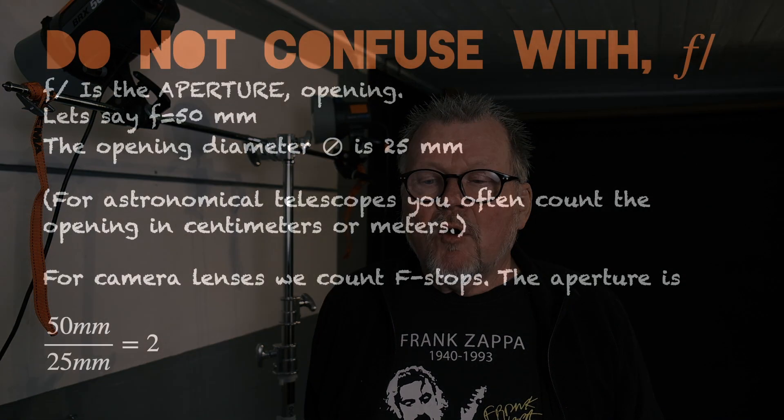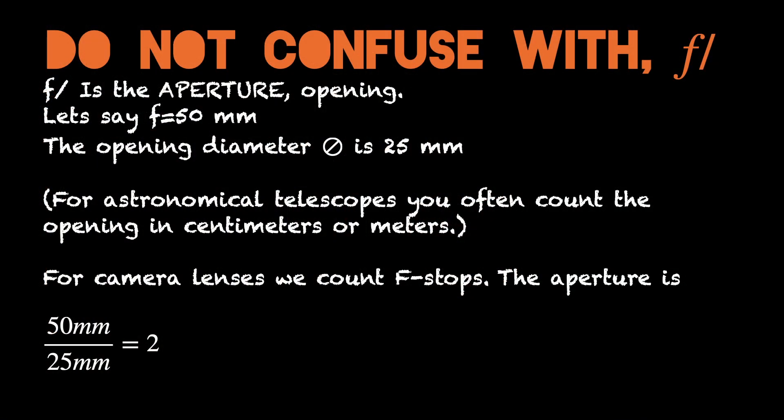Don't confuse it with F-over-something — then it's the aperture. It's the relation between aperture and focal length that makes the aperture number. You could measure aperture in millimeters, but that would be troublesome to compare across different lenses. So it's smarter to use that proportion.